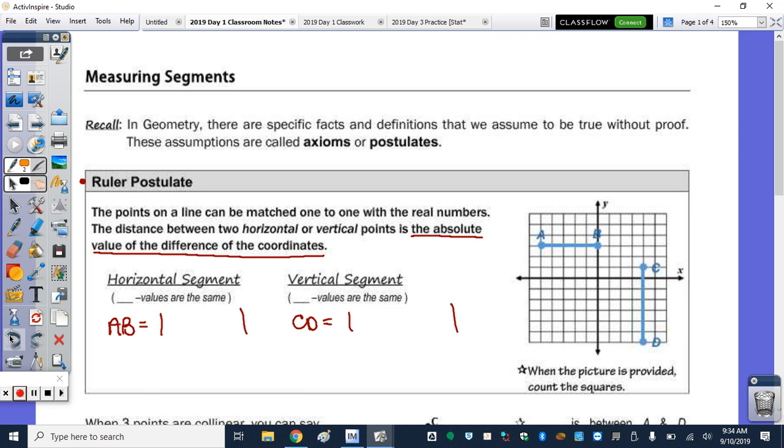Right now, I just want you to count the squares. How long is segment AB? How long is CD? And then I also want you to note the coordinates for A, B, C, and D. We can write them right next to the points. When you count the squares for AB, you should get 5. And any horizontal segment, what values are the same? Well, it's easy to spot when you actually write down the coordinates.